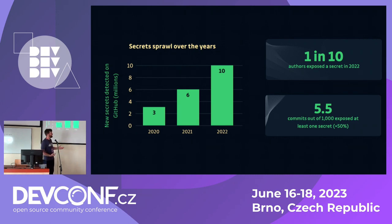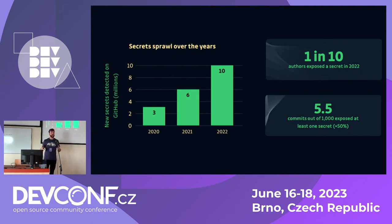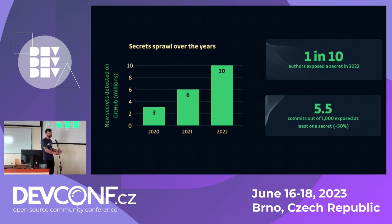Part of this is explained by an increase in GitHub — more code, more secrets. But also it's because we're using secrets in different ways now. We've got infrastructure as code, so this is changing how we're programmatically using these, and we're using them in more ways, which is why we're getting more secrets.